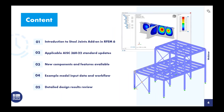To quickly go over the content we'll cover over the next hour: I want to give a brief introduction to the Steel Joints add-on for connection design within our FEA program RFEM 6. We'll talk about the applicable AISC 360 and the new 2022 standard updates relevant for RFEM. Then we'll discuss the new components and features now available within the Steel Joints add-on. Finally, we'll run through our example model to talk about the connection input data and workflow, run the analysis and design, and discuss the results.